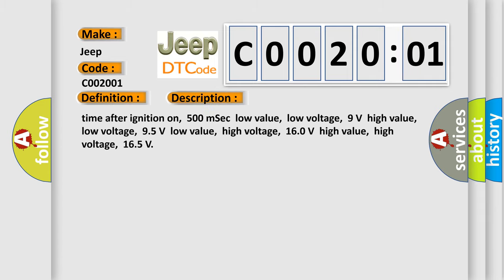Time after ignition on: 500 milliseconds. Low value, low voltage: 9 volts. High value, low voltage: 95 volts. Low value, high voltage: 160 volts. High value, high voltage: 165.